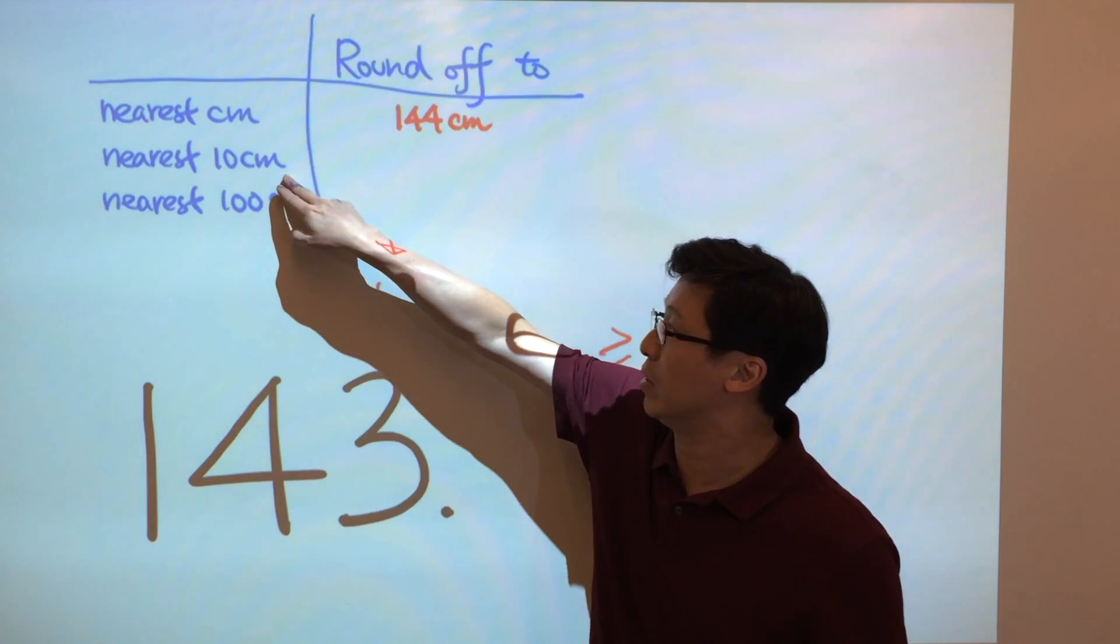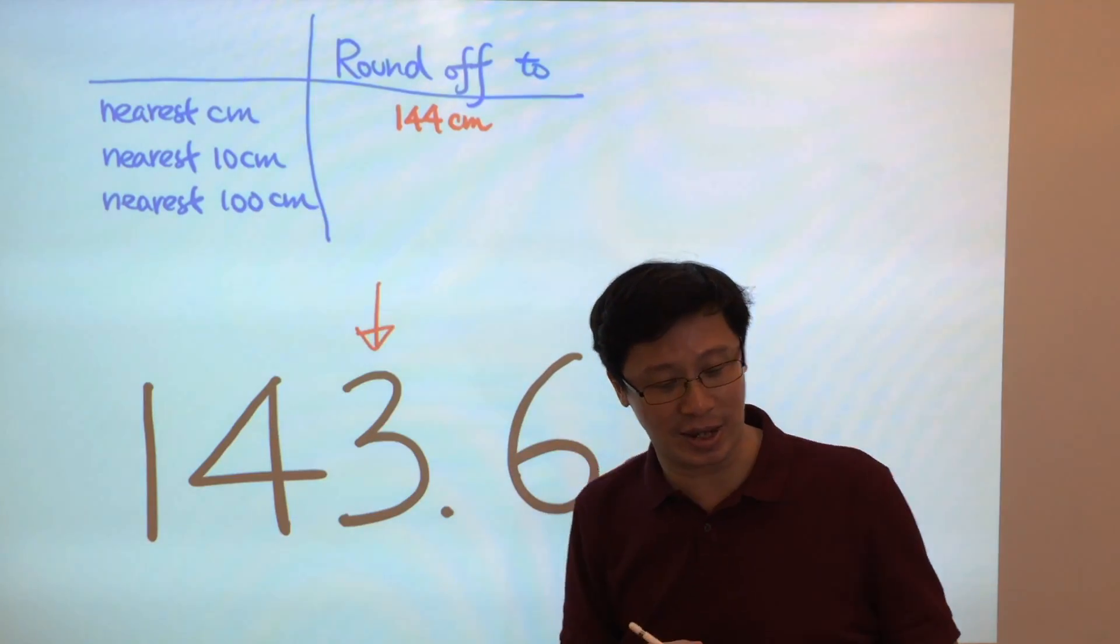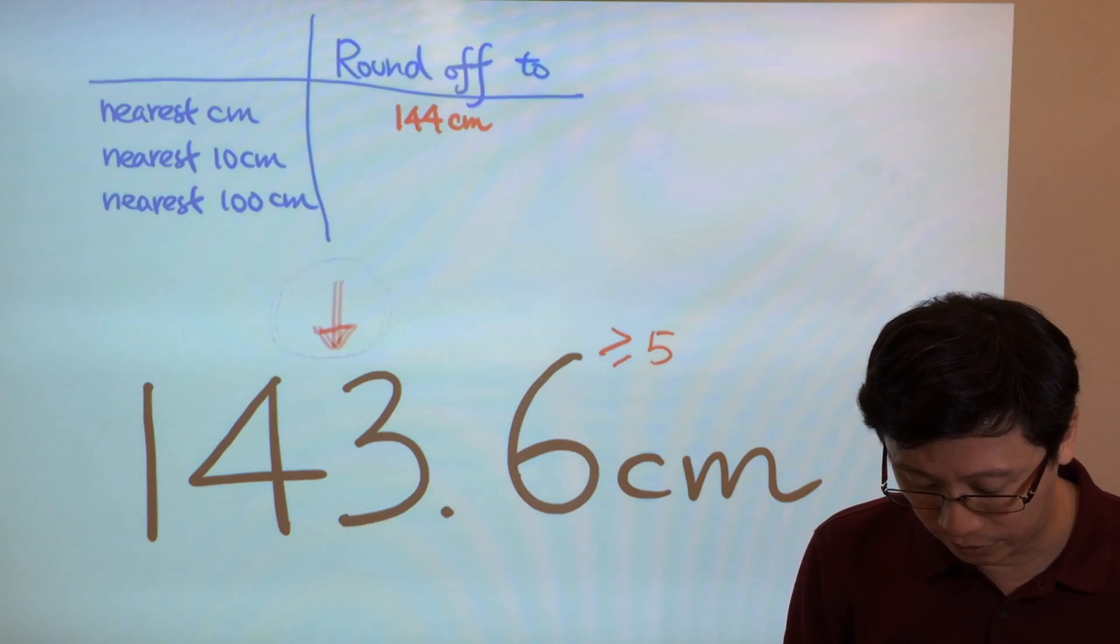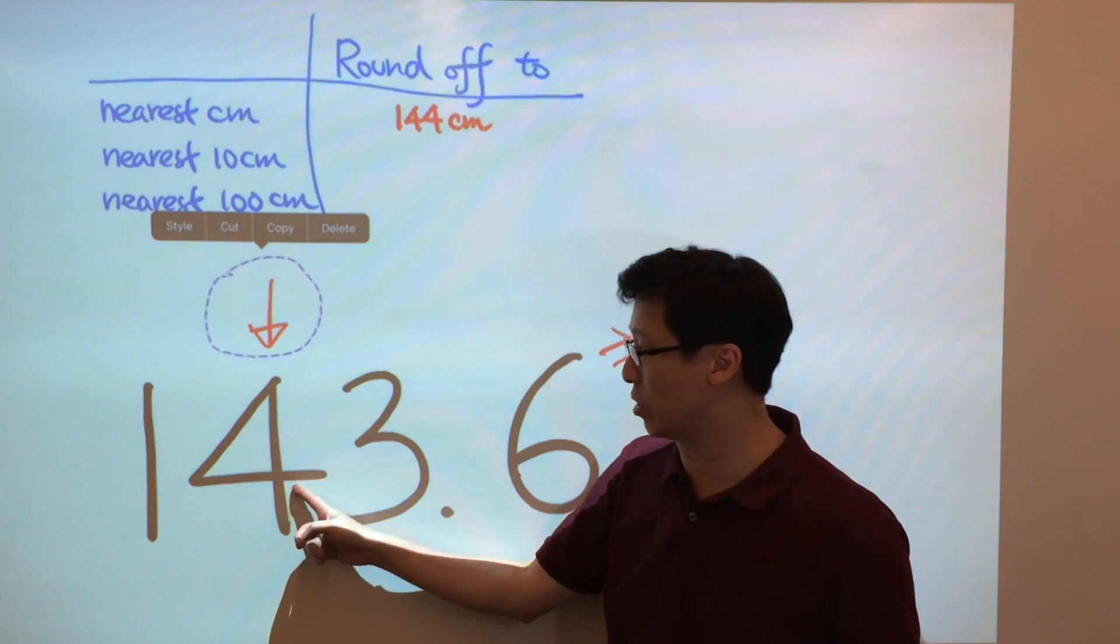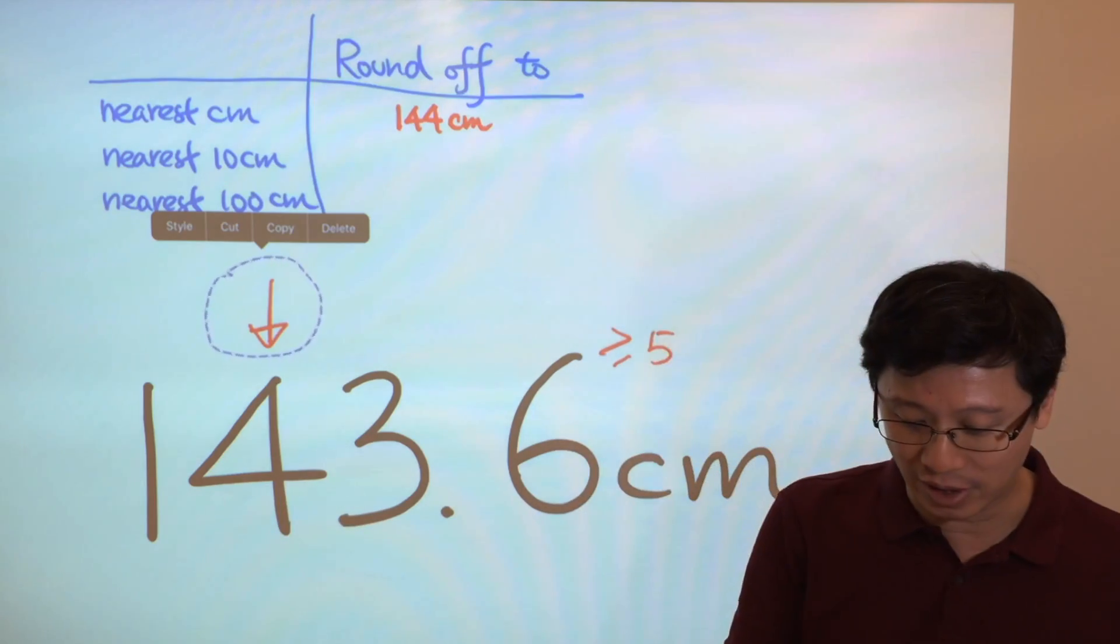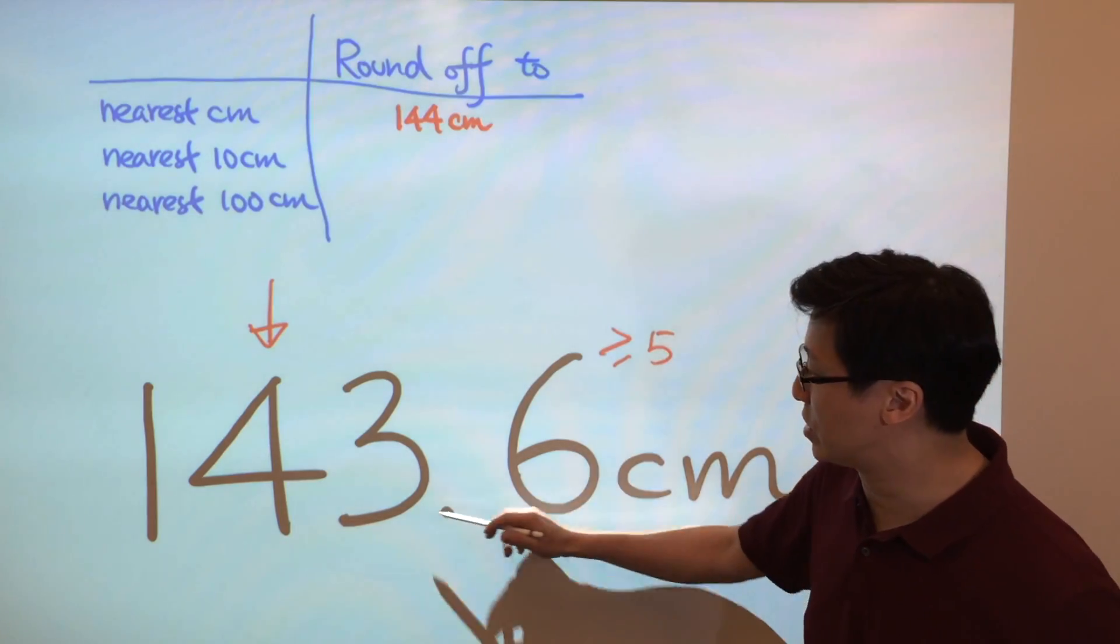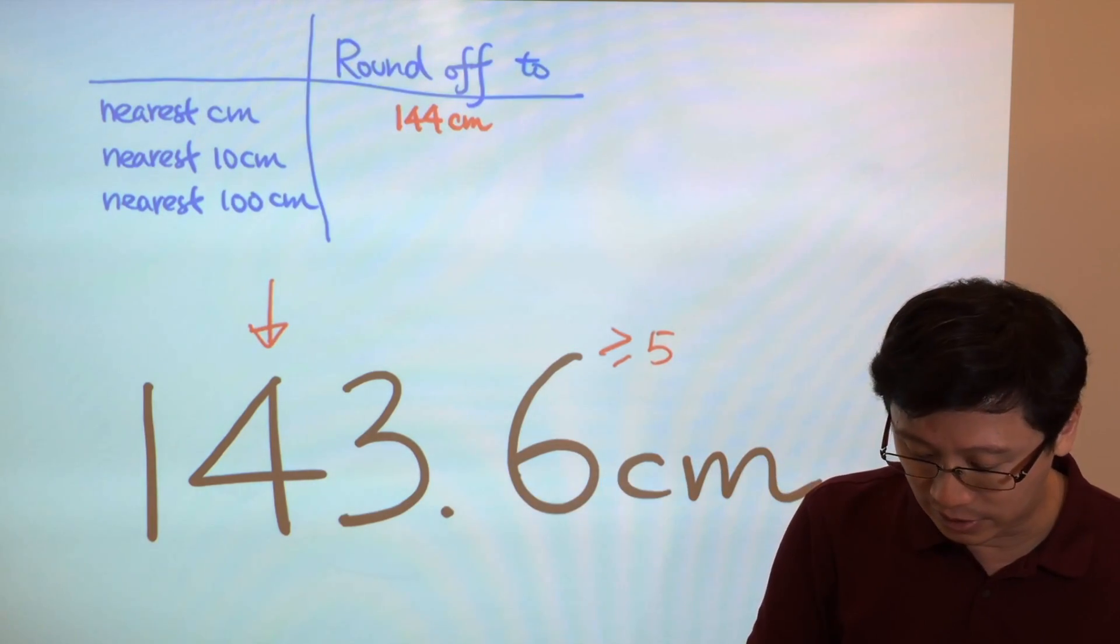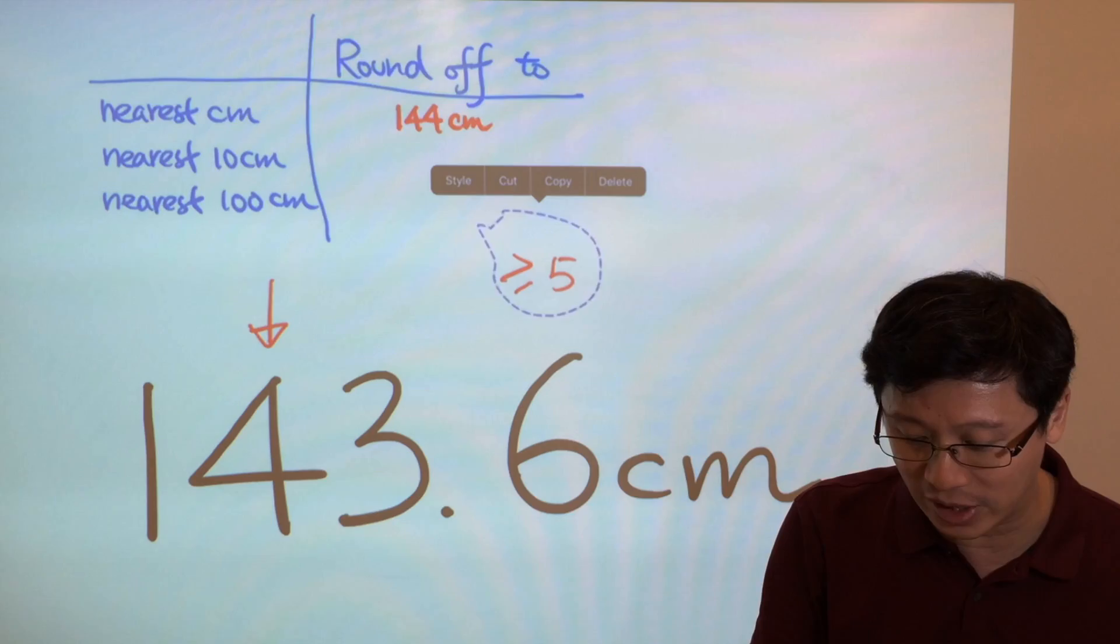What about the second one? Round to the nearest 10 cm. And now we just come up to the 10th position. That means 140. And now we consider the number to the right hand side of the 4. And this will be the number 3.